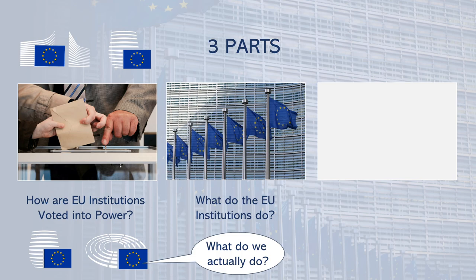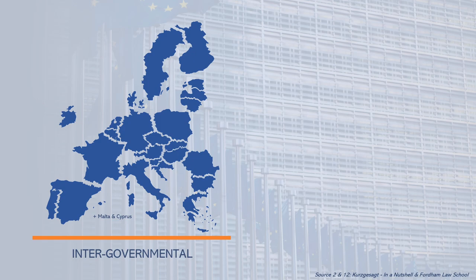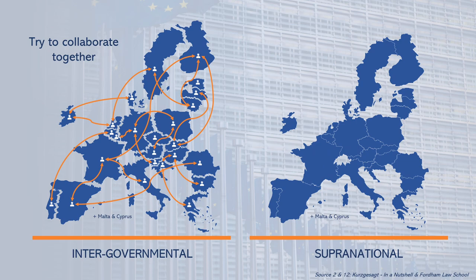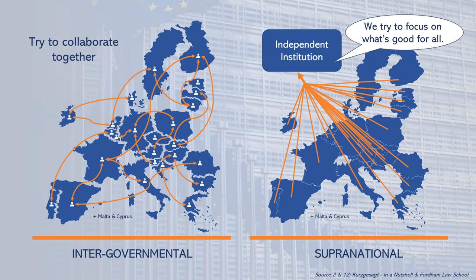To form a democratic union of nations such as the EU, there are two options. Firstly, there is the intergovernmental option, where the citizens of the nations vote for national politicians who then discuss, negotiate, and make decisions for the union together. Secondly, there is a supranational variant, where the citizens vote for politicians of an independent institution that can then make decisions across the union. The EU is a mixture of both.